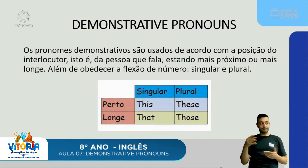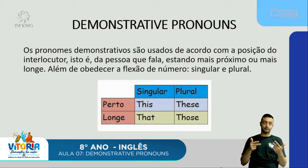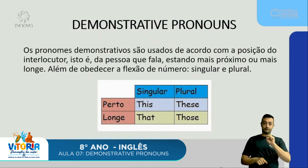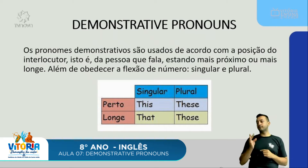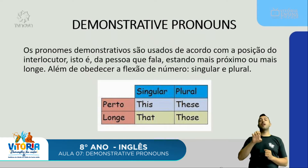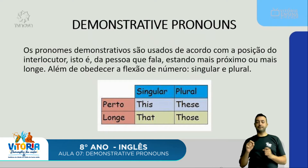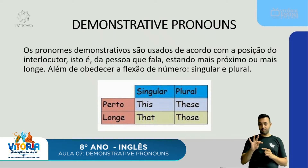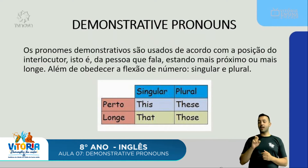Na tabela temos o 'this', que é o pronome demonstrativo utilizado para se referir a um objeto que está próximo do interlocutor — esse, este, no singular. O plural de 'this' é 'these', que significa estes ou estas. Agora, se o objeto está distante da pessoa que fala, o demonstrative pronoun correto para o singular é o 'that', que quer dizer esse, essa. Já o plural é o 'those', que quer dizer essas ou esses.